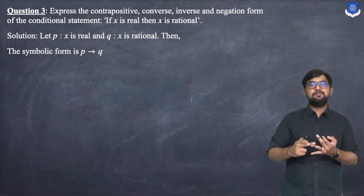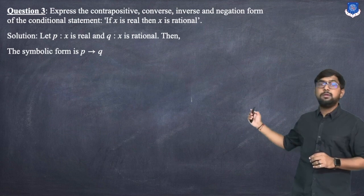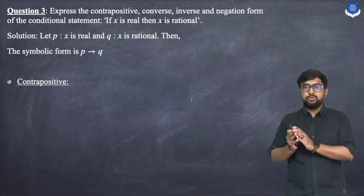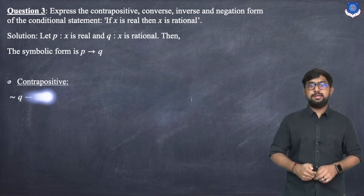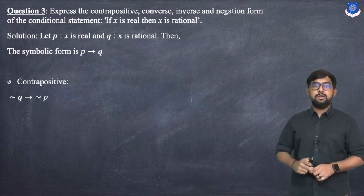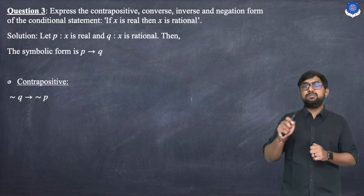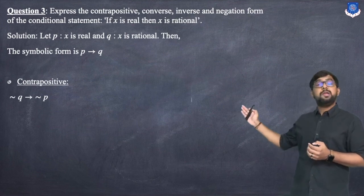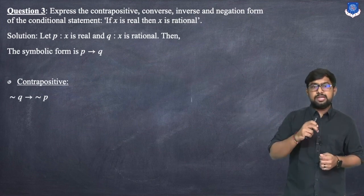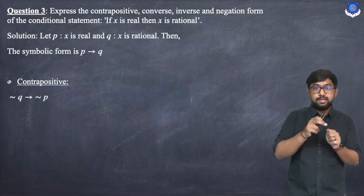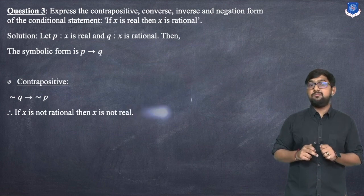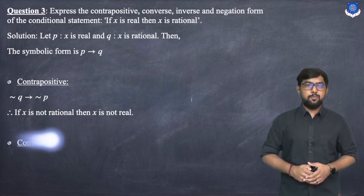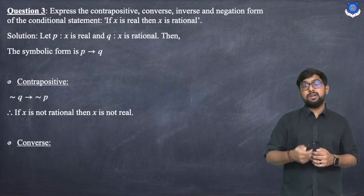The contrapositive of P → Q is ¬Q → ¬P. In statement form: 'If X is not rational then X is not real.' The converse of P → Q is Q → P, which in statement form is: 'If X is rational then X is real.'